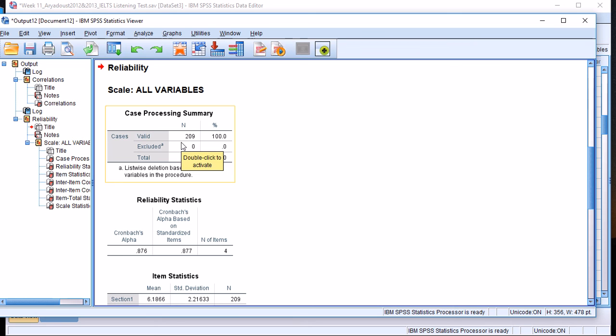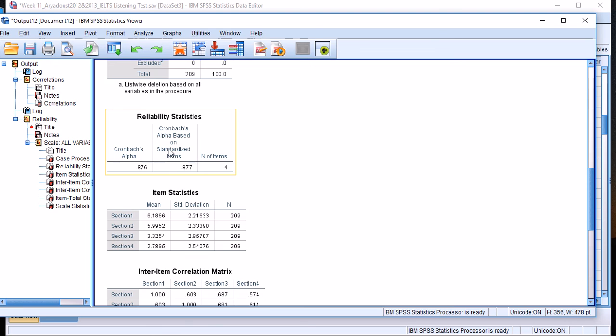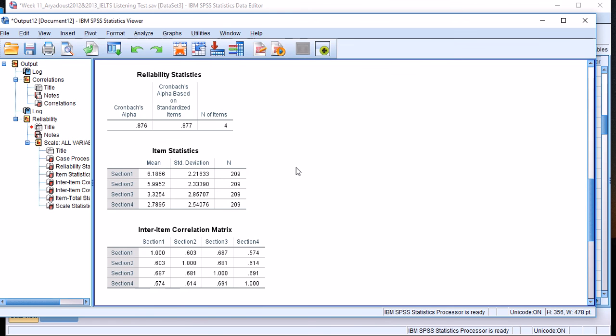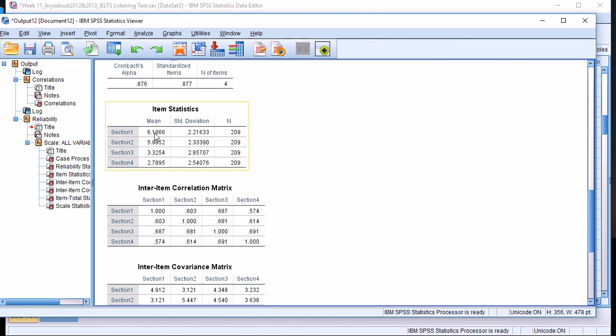I got the usual descriptive statistics—209 people were in the sample, and the data from all of them, 100%, was used. Cronbach's alpha based on standardized items is 0.877. That's based on the correlation, whereas the Cronbach's alpha based on covariance is only slightly below, 0.876, which is negligible. These are the item statistics—the mean scores drop down from section one to section four.